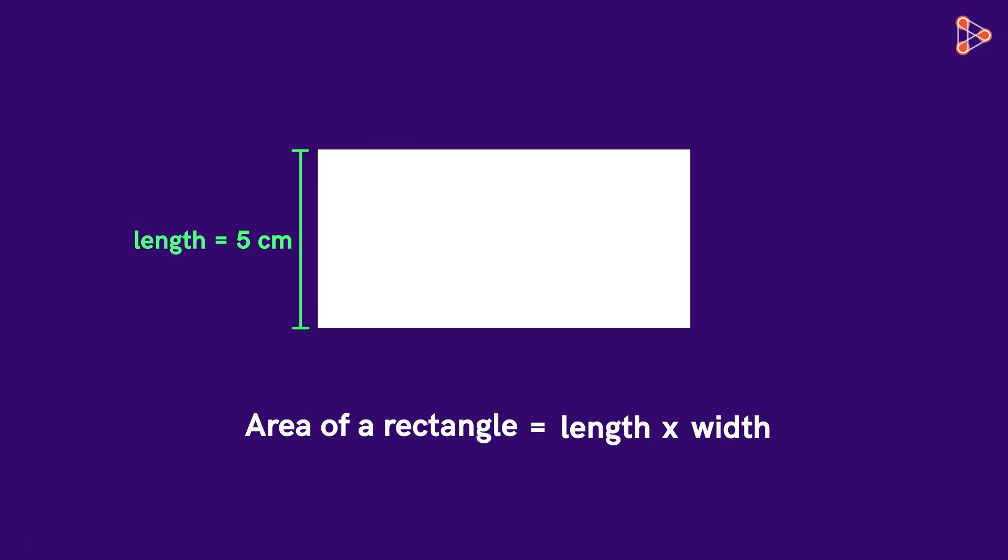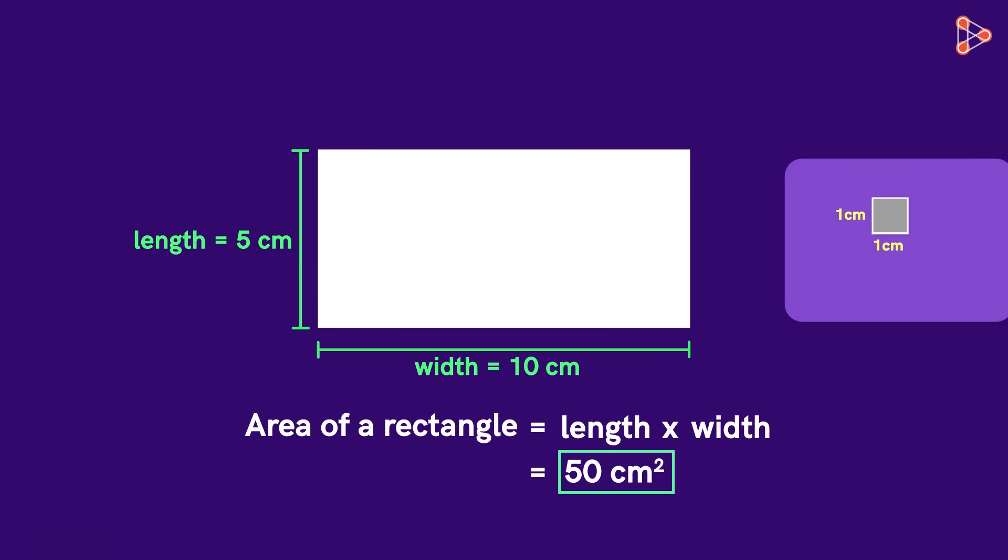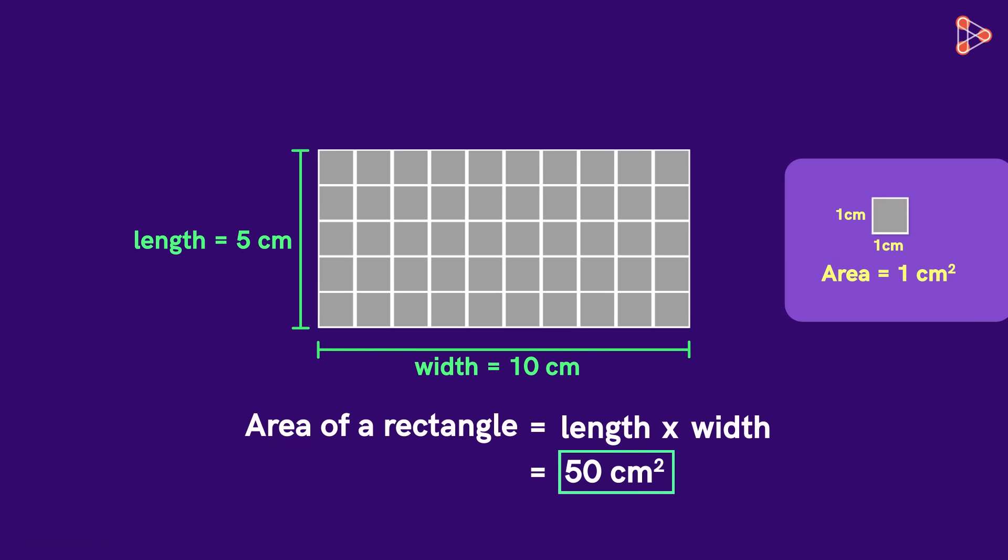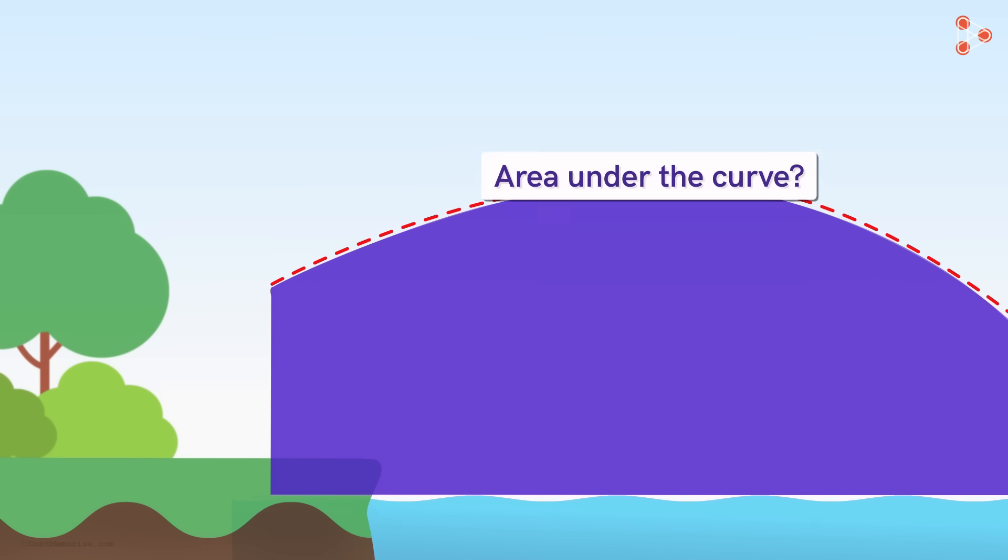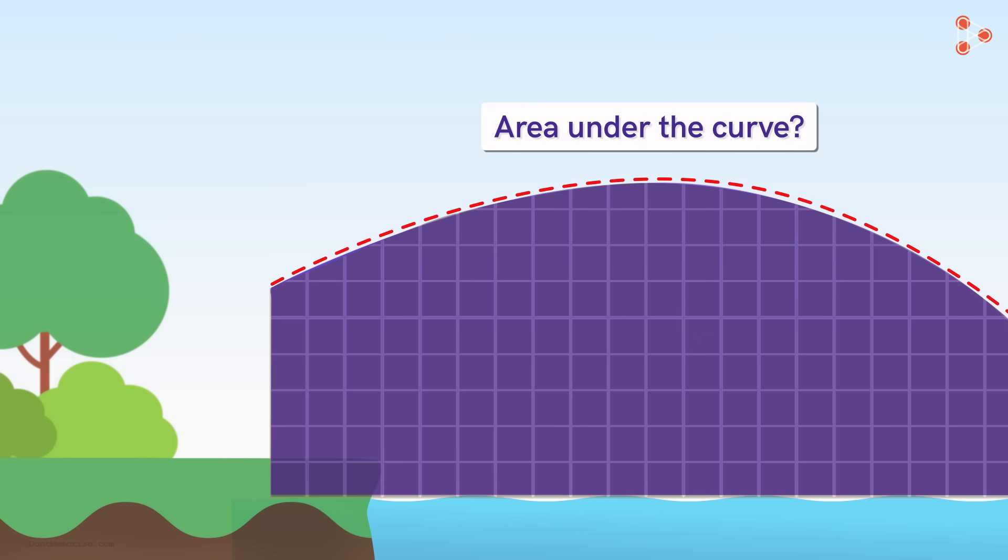Let's say the length of the rectangle is 5 centimeters and its width is 10 centimeters. Then the area of the rectangle is 50 square centimeters. So what does this mean? It means that if we take a square tile of length of 1 centimeter, that is a square tile of area 1 square centimeter, then 50 such tiles will cover this rectangle. Now let's get back to our question. What will the area be under this curve? Should we cover this area also with square tiles? This will not work right. Look at the square tiles covering the curve. We have a problem here as they don't fit perfectly. Then how can we figure out this area?